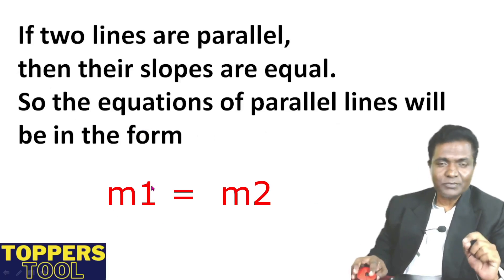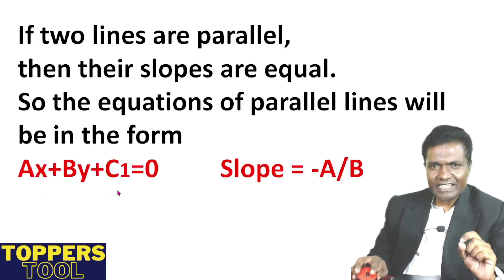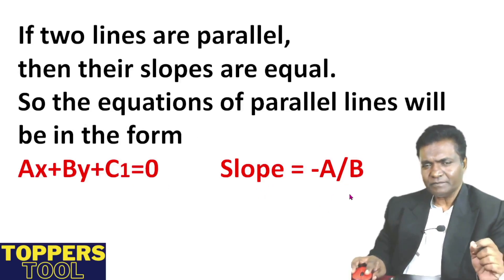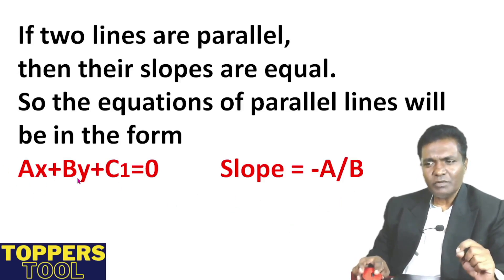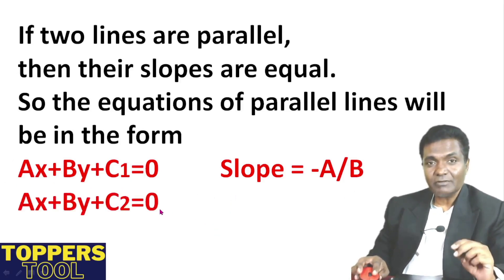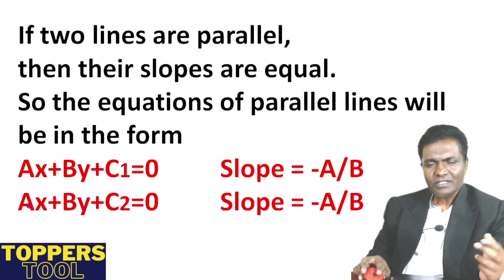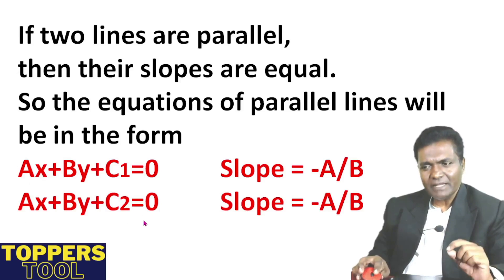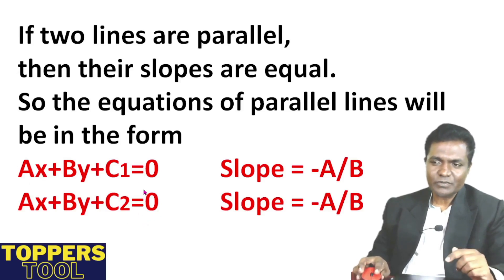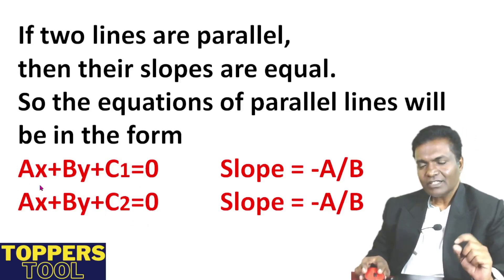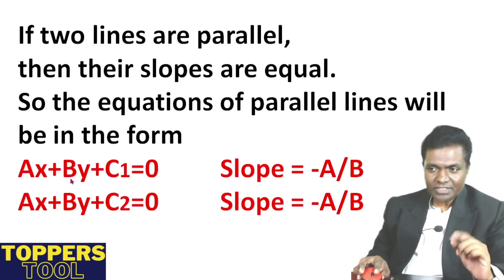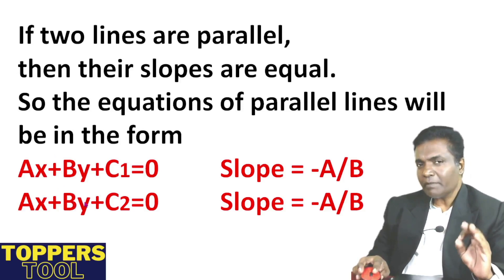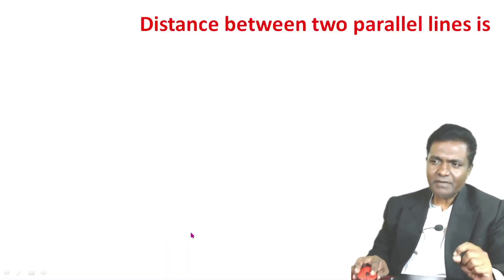So the equations of parallel lines will be in the form: ax plus by plus c1 equal to zero, and ax plus by plus c2 equal to zero. The slope of the general equation is the same — that means the coefficient of x and the coefficient of y are in the same proportion.